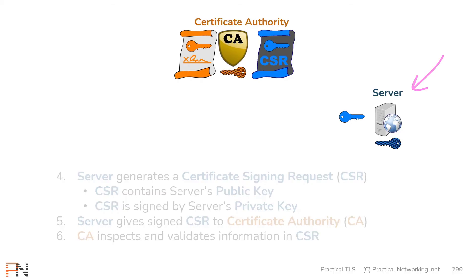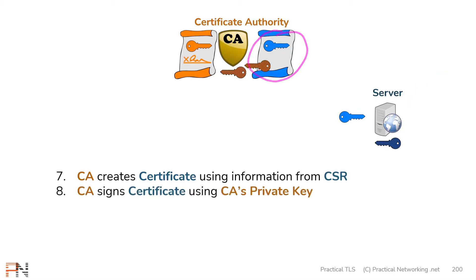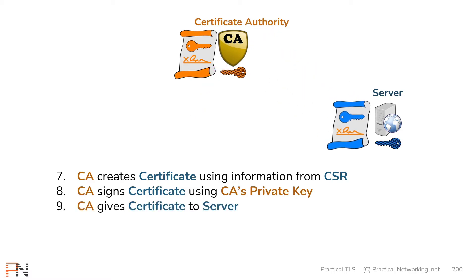Once the certificate authority is content with the identity of the server, it will generate an actual certificate using information from inside the CSR — namely the server's public key. Furthermore, this certificate is signed with the CA's private key. What this signed certificate does is tie a particular set of asymmetric keys to a particular identity, and this identity is guaranteed by the certificate authority. This certificate is then handed back to the server.